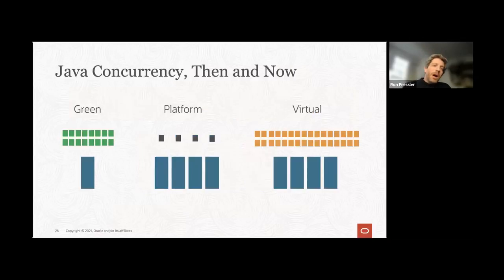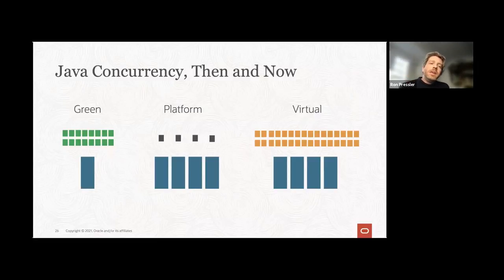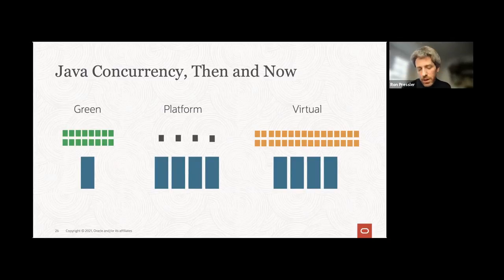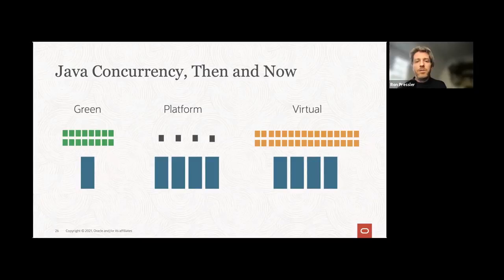Some may remember that early in Java's history, back in Java 1.0, certain JVM implementations had green threads, which also implemented Java threads in user mode. Those early JVMs used just one OS thread. For the last 20-something years we've had platform threads with a one-to-one mapping between Java.lang.Thread and OS threads. Virtual threads is a many-to-many relationship, with many more virtual threads than OS threads.